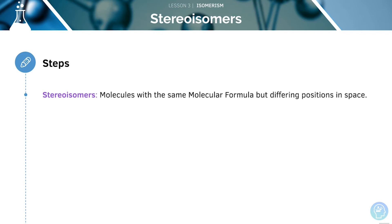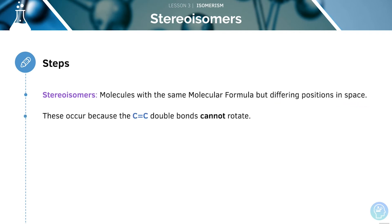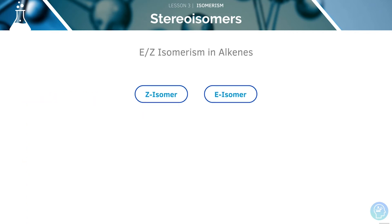Stereoisomers are molecules with the same molecular formulae but differ in positions in space. These occur because the carbon-carbon double bonds cannot rotate. This means that there are different isomers formed as the position of the groups bonded to the carbons in the double bond cannot be interchanged. One type of stereoisomerism is called EZ isomerism, which occurs in alkenes.